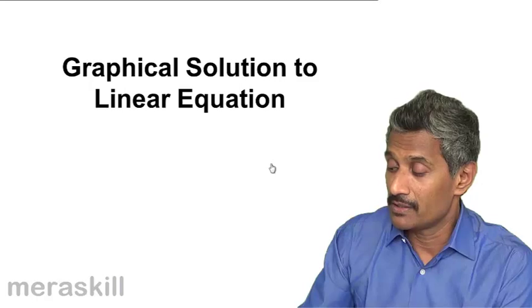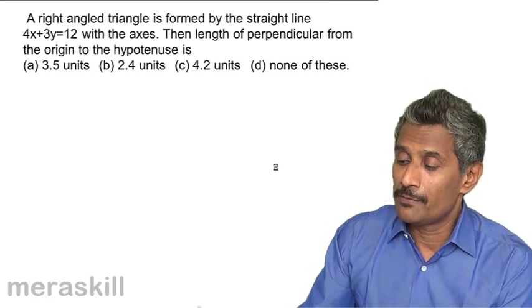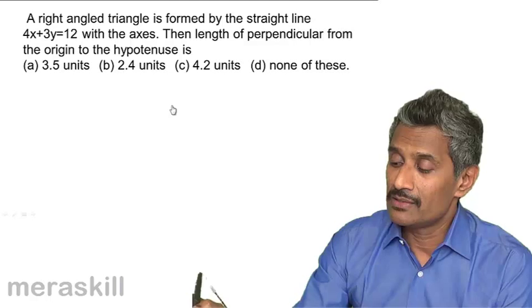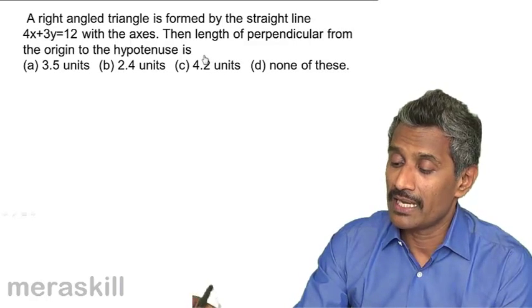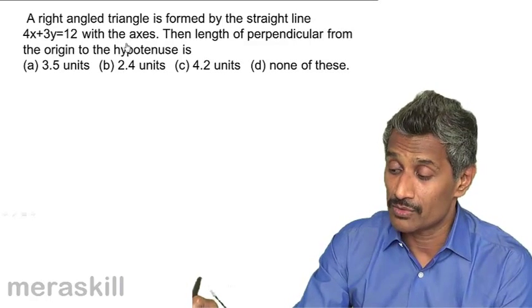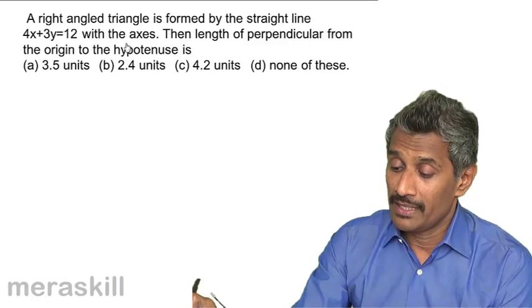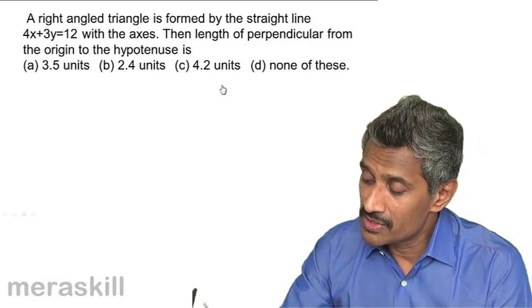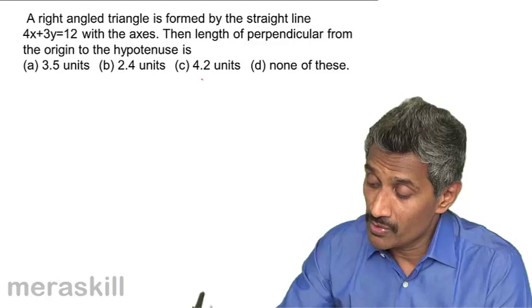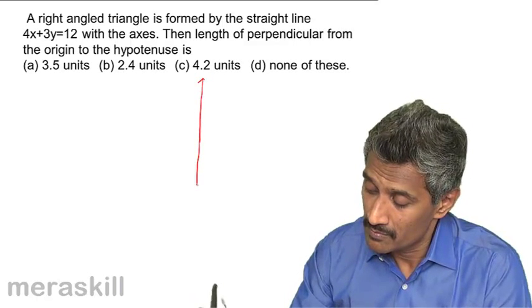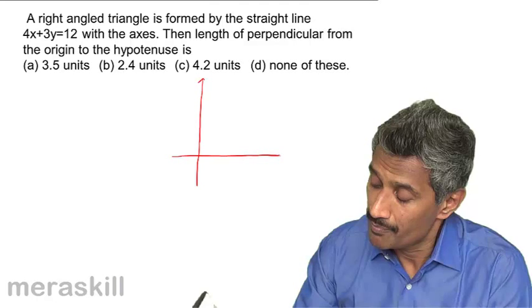Now here's an example: a right angle triangle is formed by the straight line 4x plus 3y equals 12. Let's draw a diagram over here. You have the axes and you have a straight line like this.